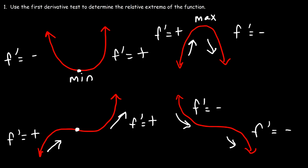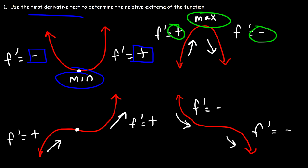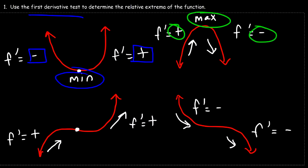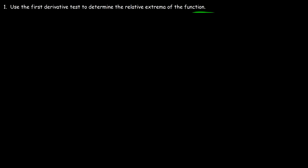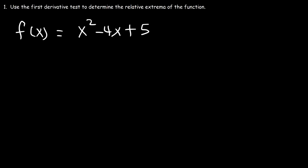But if it changes from negative to positive, then according to the first derivative test, a minimum exists. Or if it changes from positive to negative, then there's a relative maximum. Now let's work on some practice problems. Consider the function f(x) = x² - 4x + 5. Go ahead and use the first derivative test to determine the relative extrema of this function.